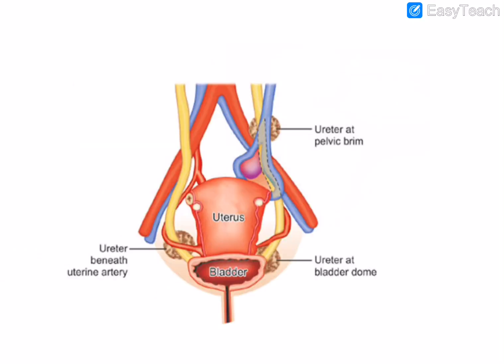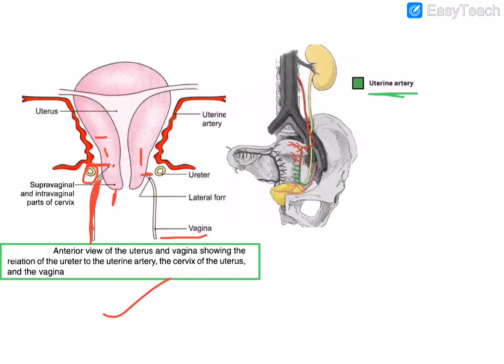The terminal part of the ureter lies anterior to the vagina as it enters into the bladder. These are the relations of the forward course of the ureter in females. In the next session we are going to discuss the blood supply and nerve supply of the ureters. Thank you.